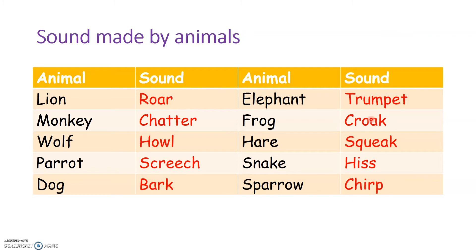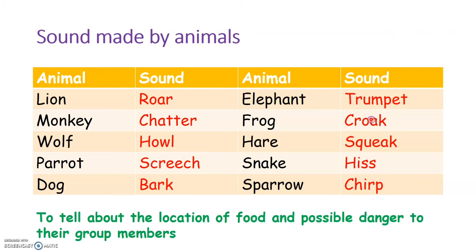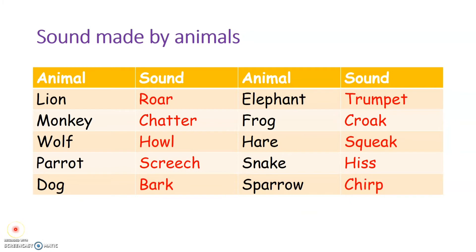Do you know why animals produce different sounds? Animals use these sounds to tell about the location of food and also about possible danger to other members of their group. They communicate with other members of the group by making these sounds.